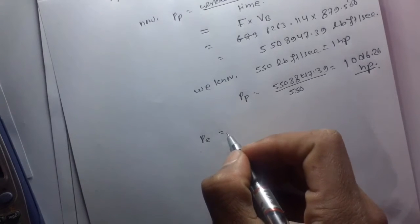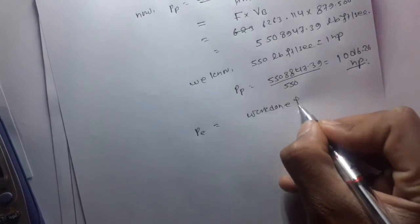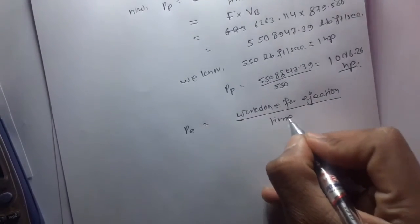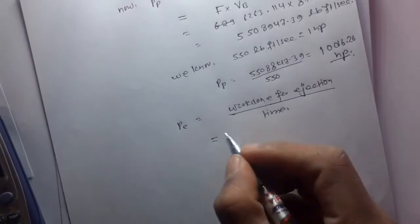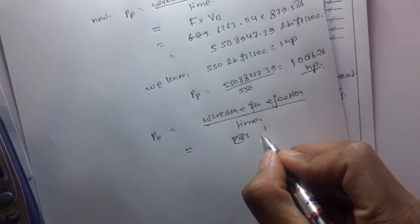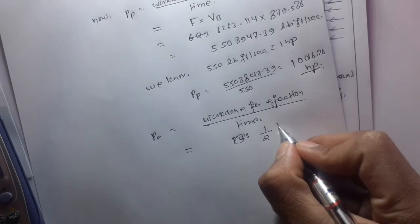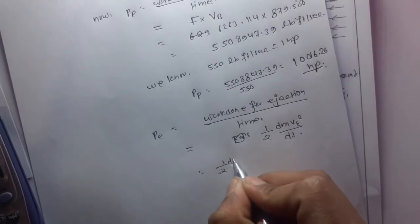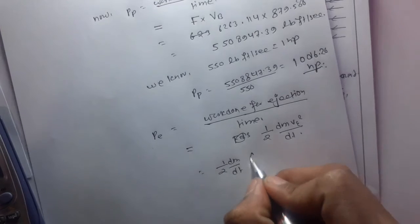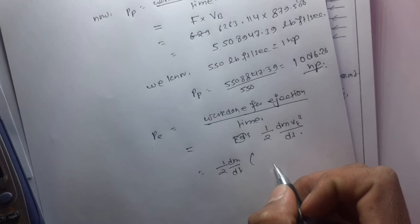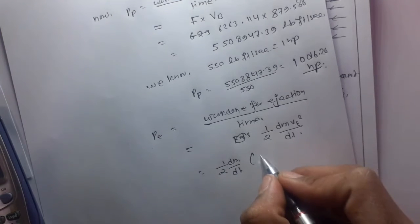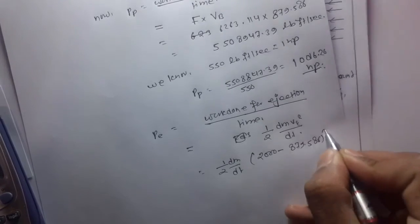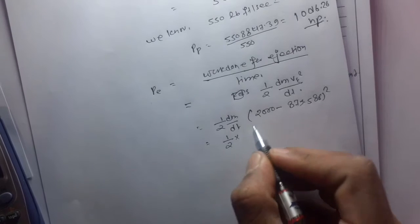Power of ejection is given by work done for ejection upon time, so this is kinetic energy: 1/2 dm v squared upon dt. So 1/2 dm/dt, and v is the velocity of ejection with respect to earth, so this is 2000 minus 879.586 squared.